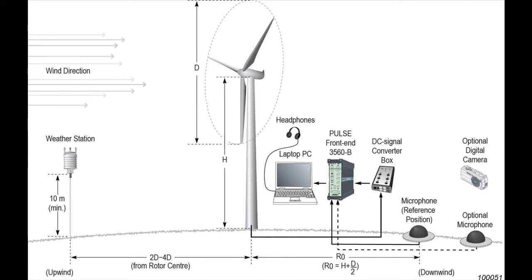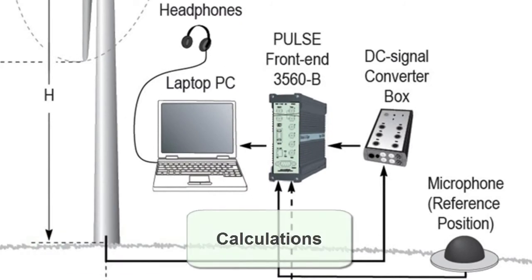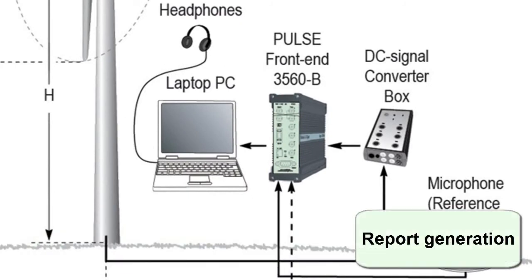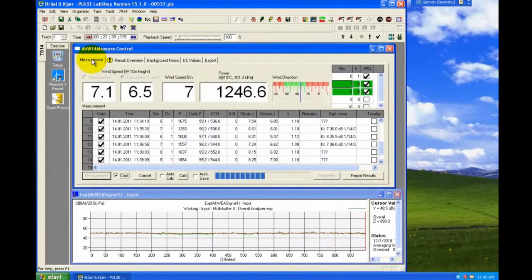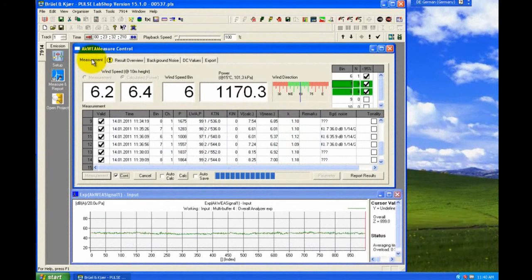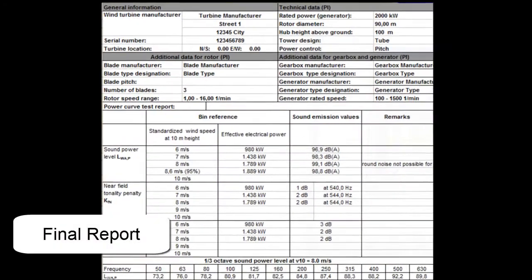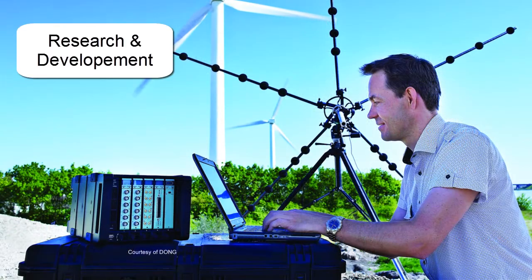The Brüel & Kjær dedicated solution does all the bookkeeping of the data, the calculations and the generation of the report, which means the user saves both time and effort. While the measurement is in progress, data is collected and put into the appropriate wind bin, together with all the relevant operational parameters, before producing the final report.